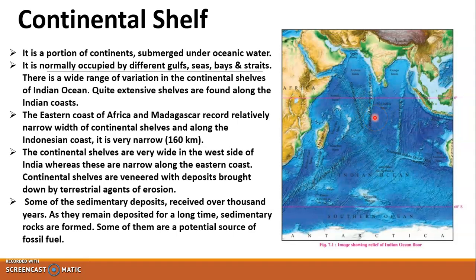The continental shelves are laden with deposits brought down by terrestrial agents of erosion — sea waves, running water, and rivers meeting the sea — through erosion, transportation, and deposition. Sedimentary deposits accumulated over thousands of years form sedimentary rocks under intense pressure. Some of these are potential sources of fossil fuels.